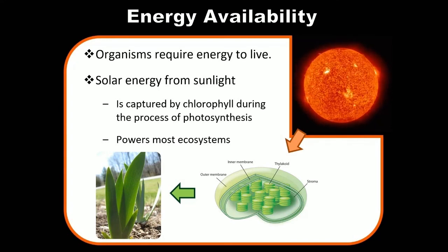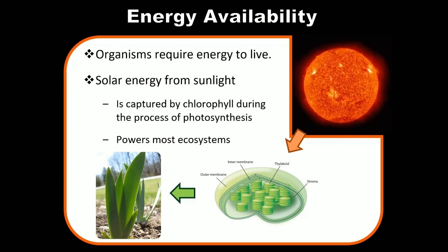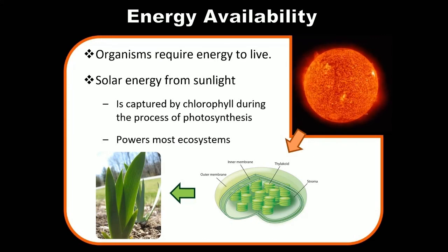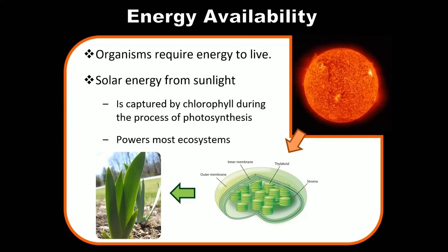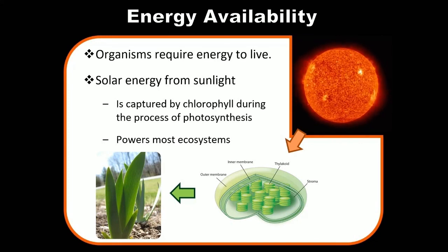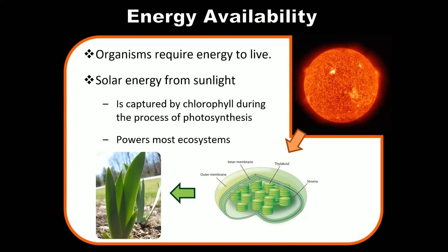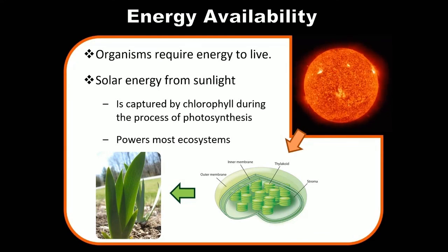Plants accomplish this through photosynthesis, carried out in their chloroplasts — an organelle inside plant cells covered back in Unit 2. That energy captured from sunlight is then transferred to herbivores when they eat plants and digest those sugars through cellular respiration. The herbivores are then eaten by carnivores, which gain that same energy. Some energy is lost at every level of the ecosystem, and we'll see interesting consequences arising from that inefficiency.